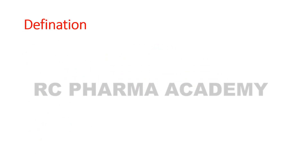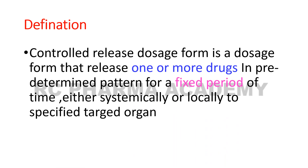Controlled Drug Delivery System — definition: A controlled drug delivery system is a form of dosage form in which one or more drugs are released in a pre-determined pattern over a fixed period of time. It should release the drug for at least 24 hours or 48 hours.